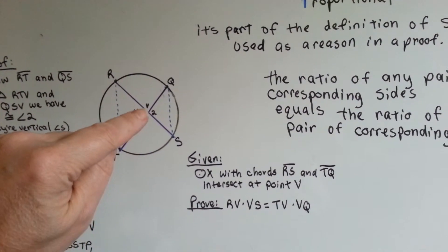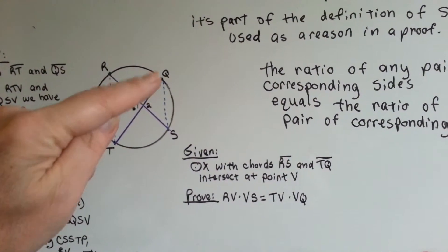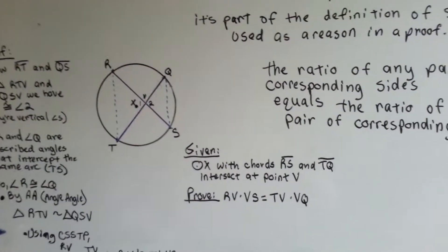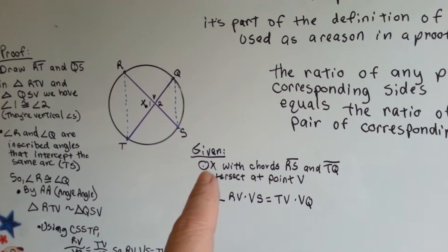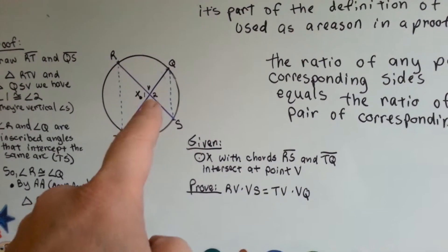We got, they meet at V, and we have angle 1 and angle 2. And as you can see, I drew in these lines to help me. So given, circle X with chords RS and TQ intersect at point V. We saw that.